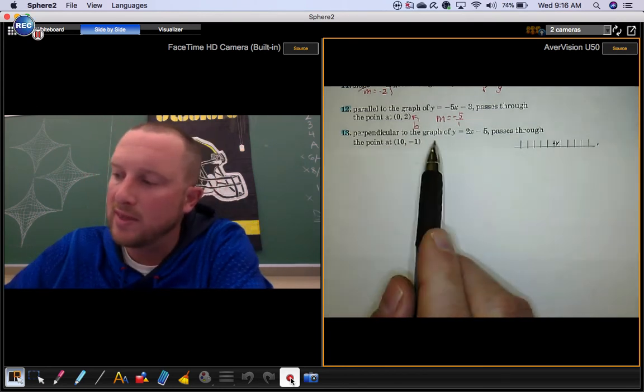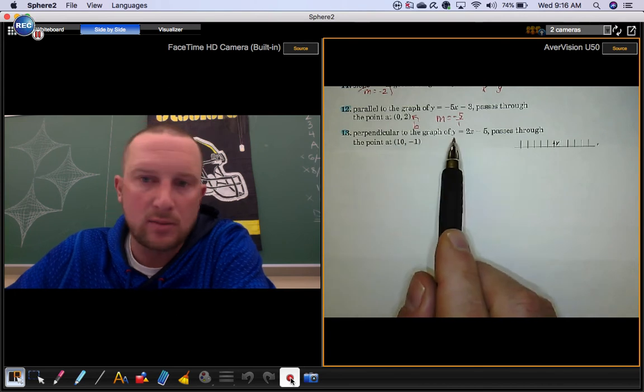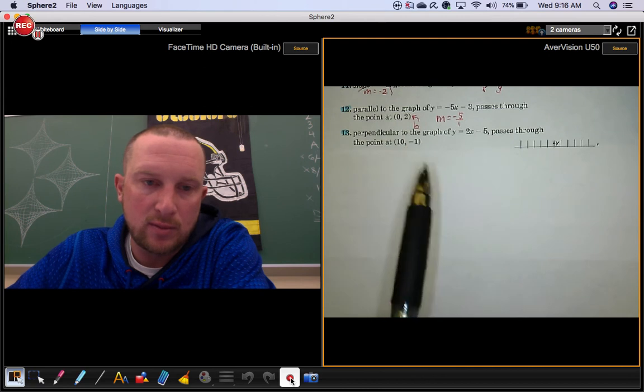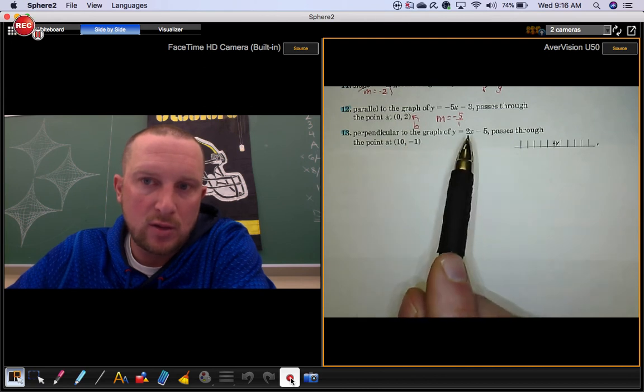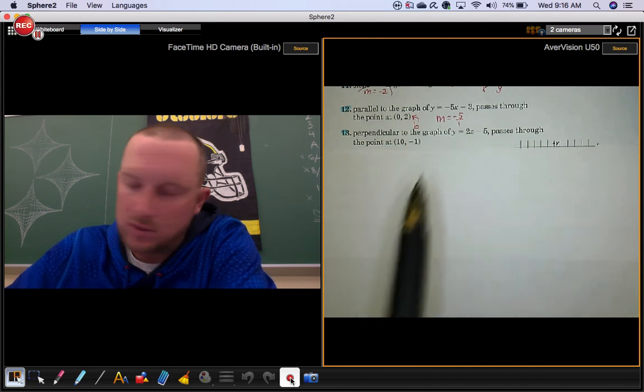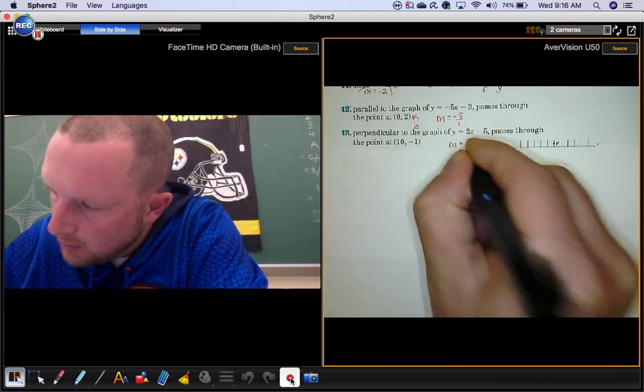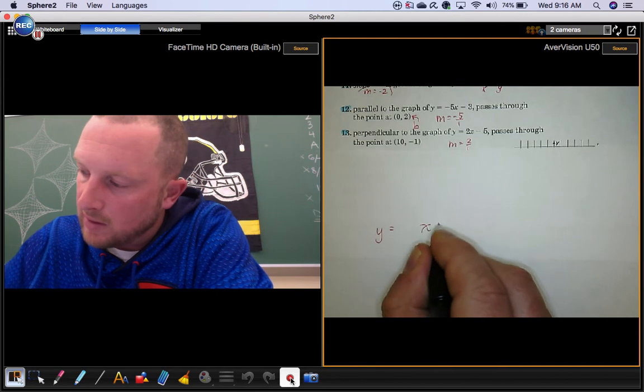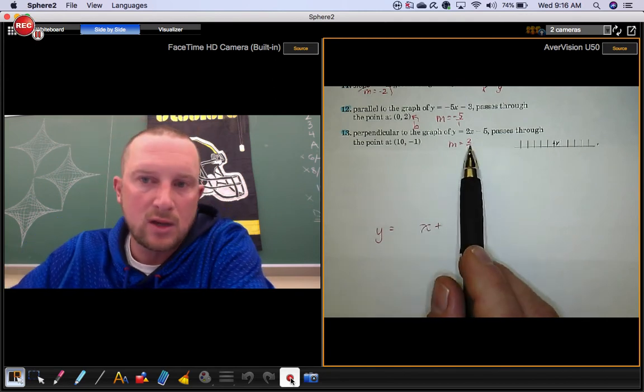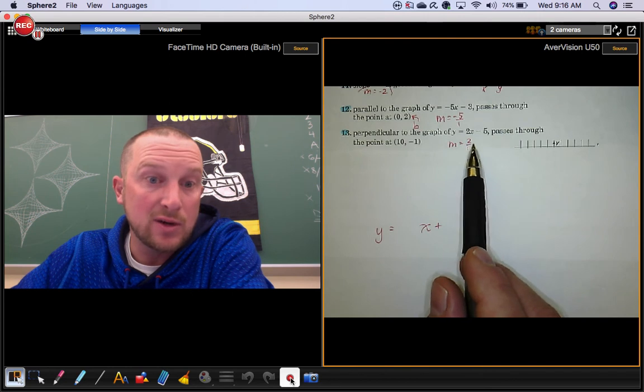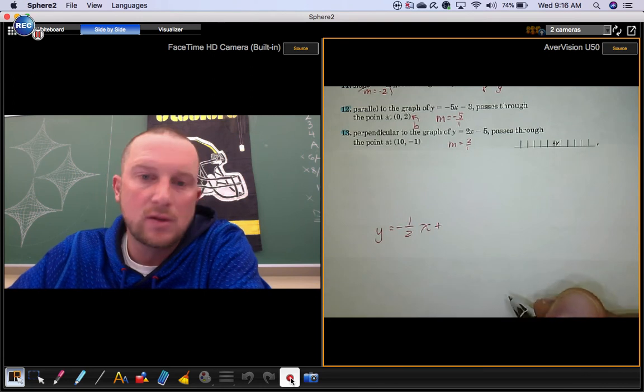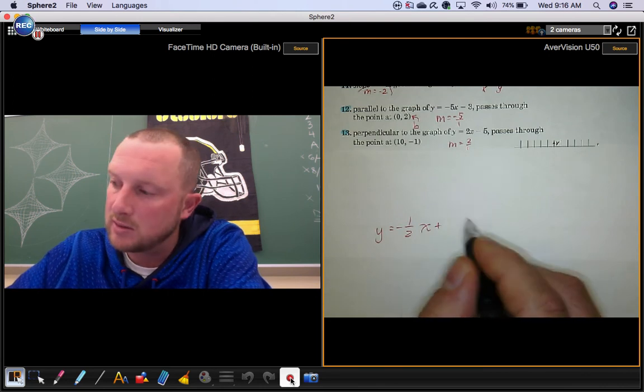Number 13. We want lines to be perpendicular. So, perpendicular to this line and goes through this point. Notice the slope on this line is 2 over 1. You want the equation of a line that's perpendicular to this one. So you're not going to keep the slope the same. You're going to change it. You're going to flip it and change the sign. So you're going to make it negative 1 half x plus the y-intercept.